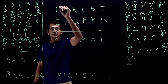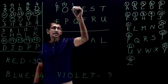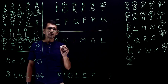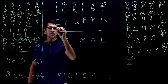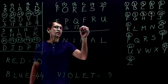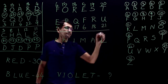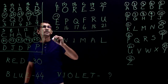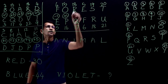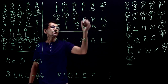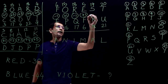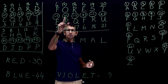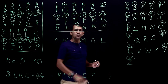So we go for position values of letters. F=6, O=15, R=18, E=5, S=19, T=20. For the code: E=5, P=16, Q=17, F=6, R=18, U=21. Now, 6 is coded as 5 (minus 1), 15 is coded as 16 (plus 1), 18 is coded as 17 (minus 1), 5 is coded as 6 (plus 1). The pattern is: minus 1, plus 1, minus 1, plus 1.